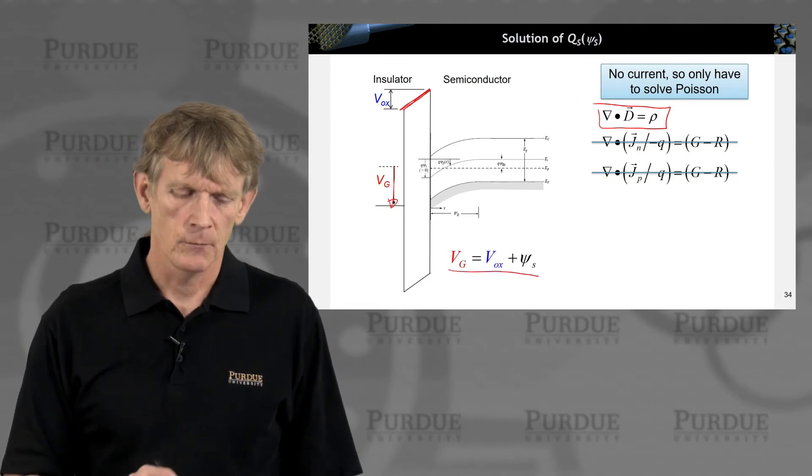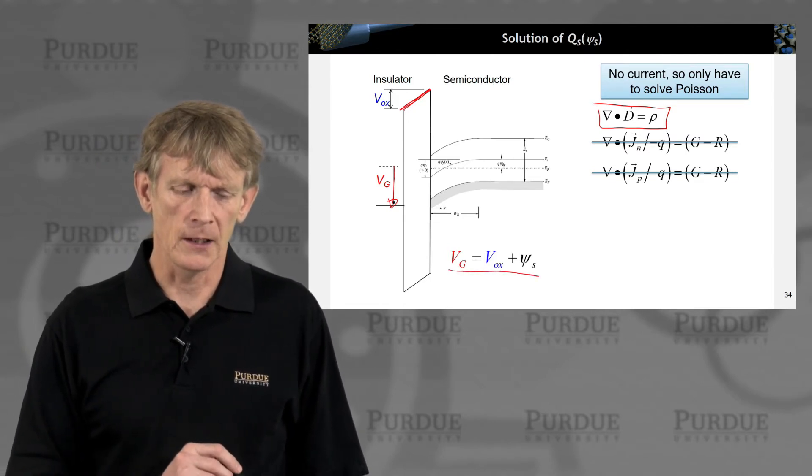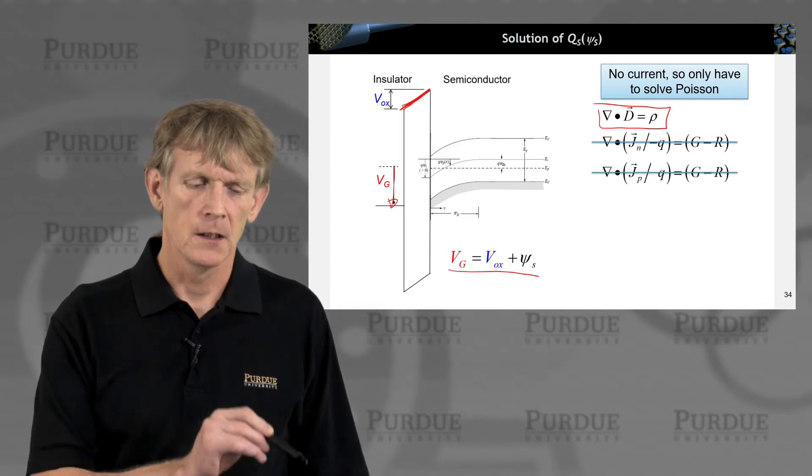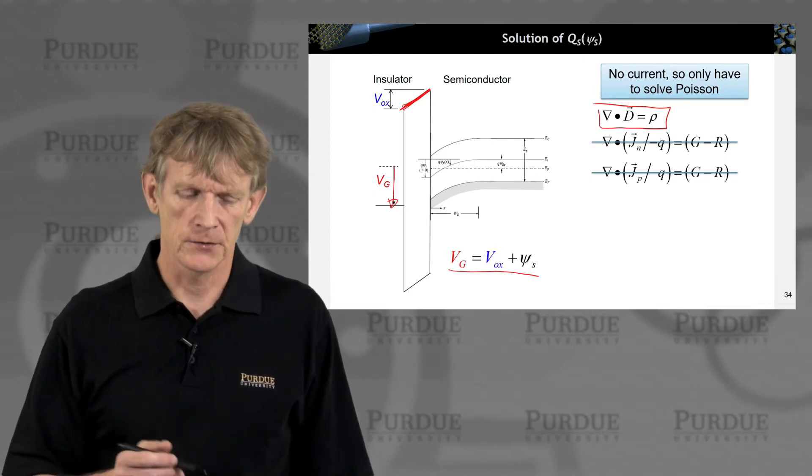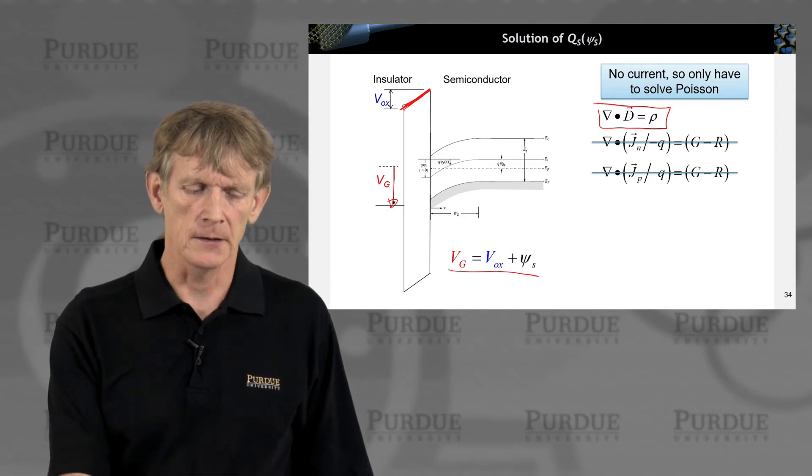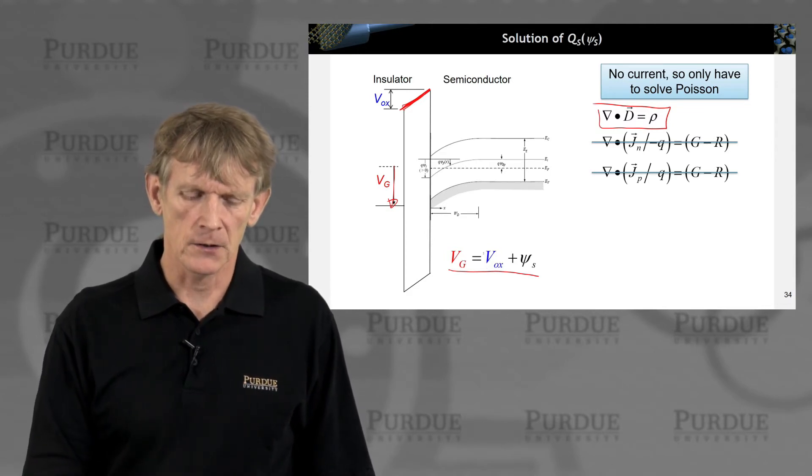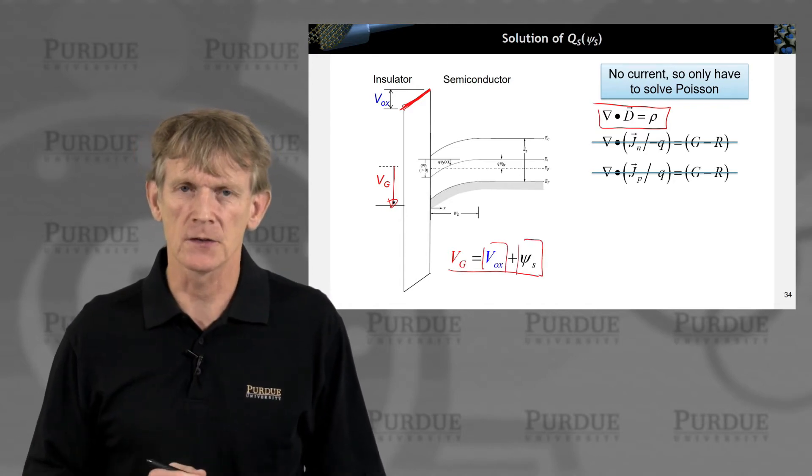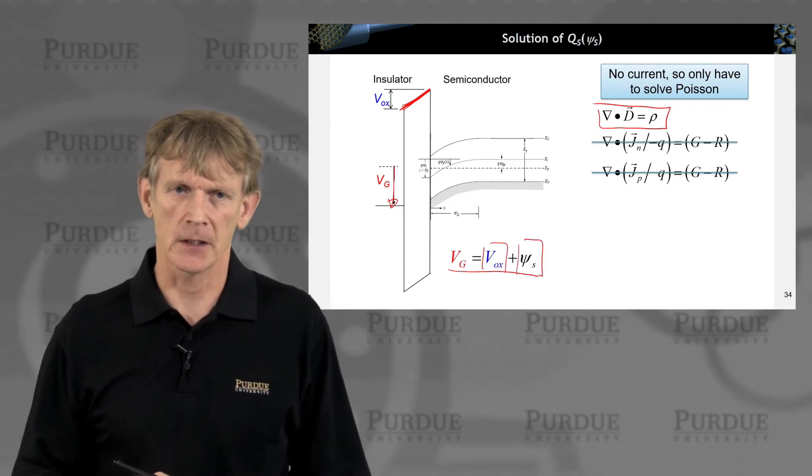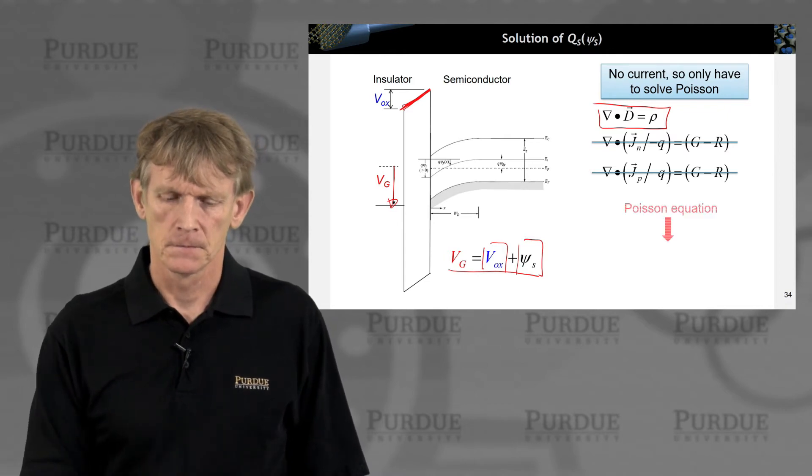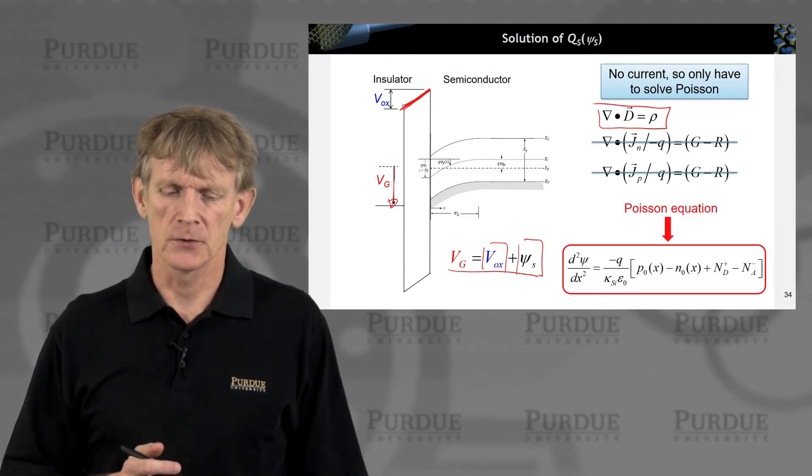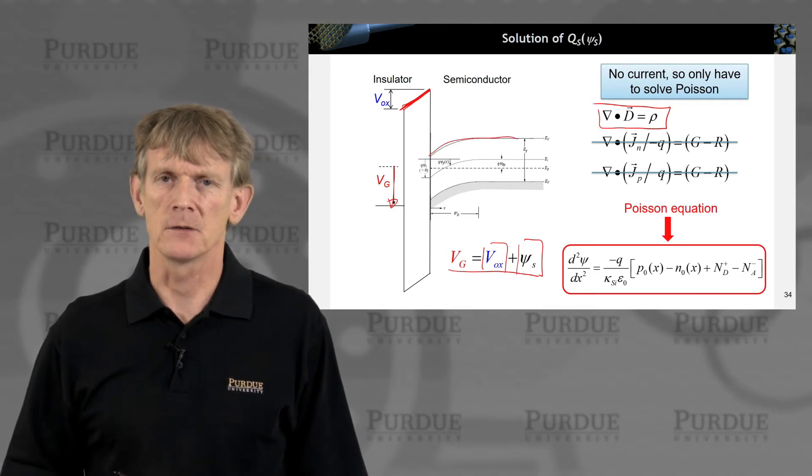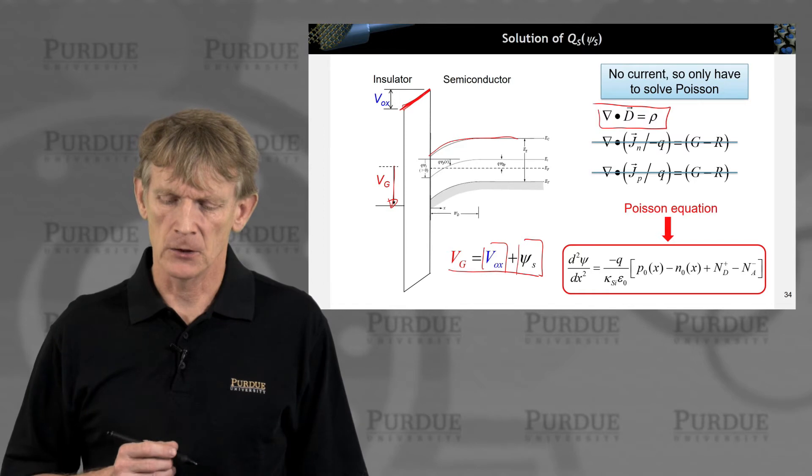One thing to remember, the total voltage must be the gate voltage we apply, the oxide voltage that we drop potential, sorry, the potential we apply on the metal, the oxide potential, and then the surface potential on the semiconductor. Those three need to add up. And we'll solve Poisson equation to get the detailed curvature of these bands.